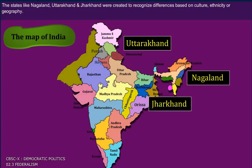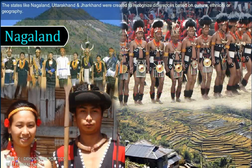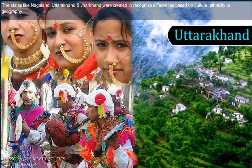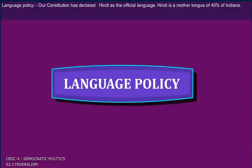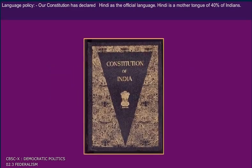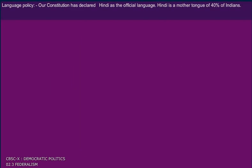States like Nagaland, Uttarakhand, and Jharkhand were created to recognize differences based on culture, ethnicity, or geography.